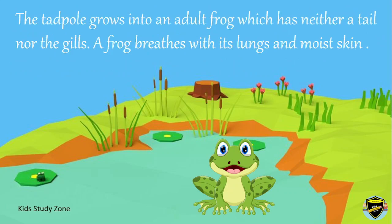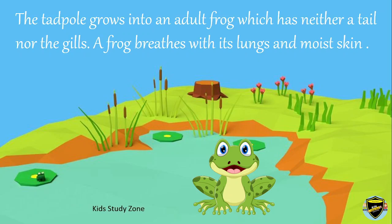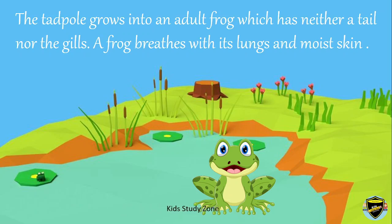The tadpole grows into an adult frog, which has neither a tail nor gills. A frog breathes with its lungs and moist skin.